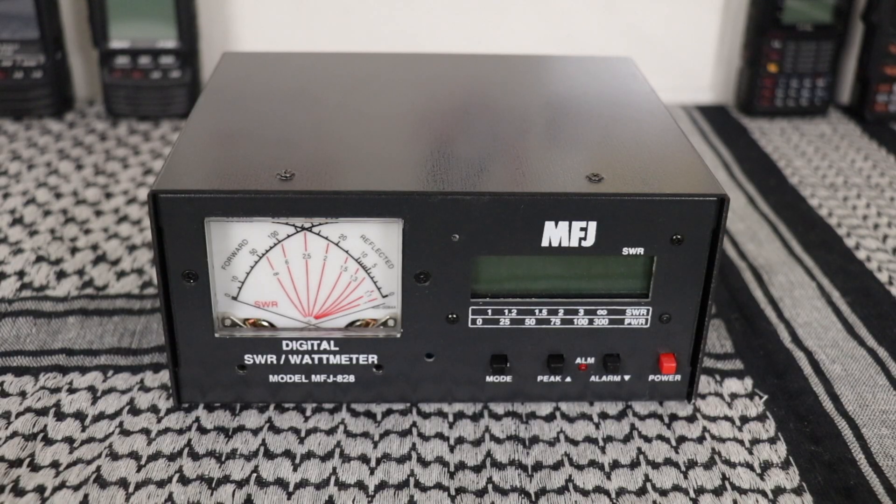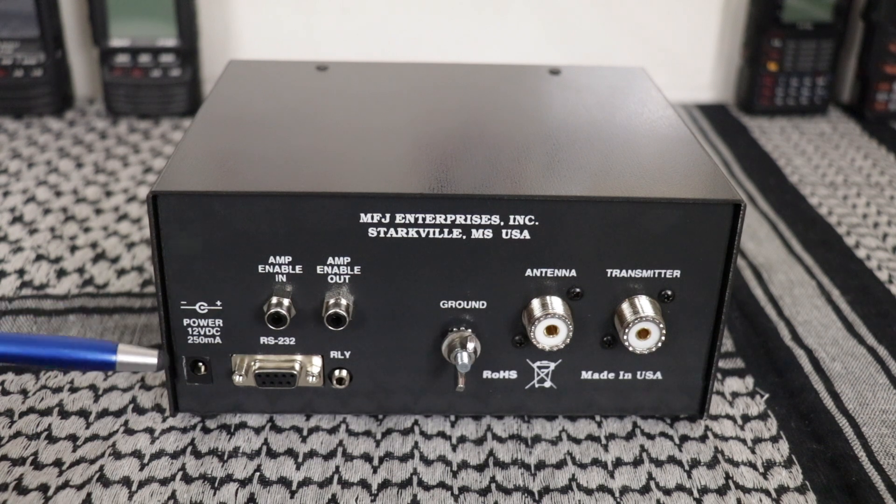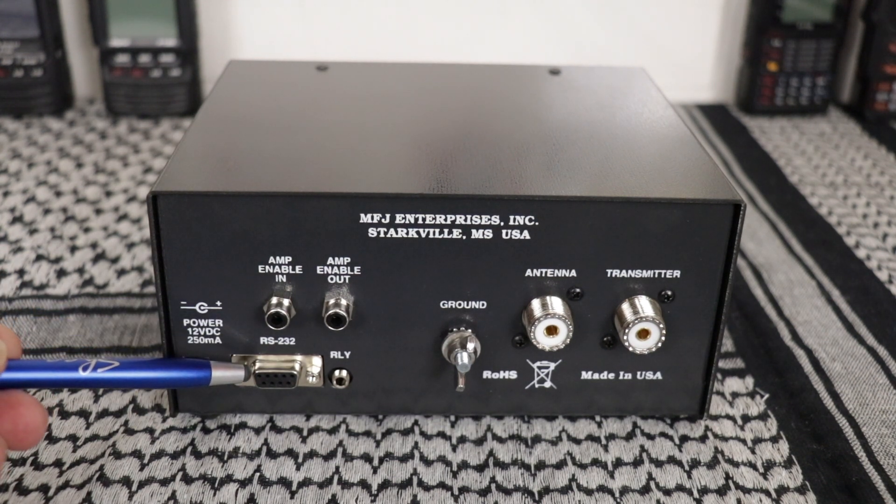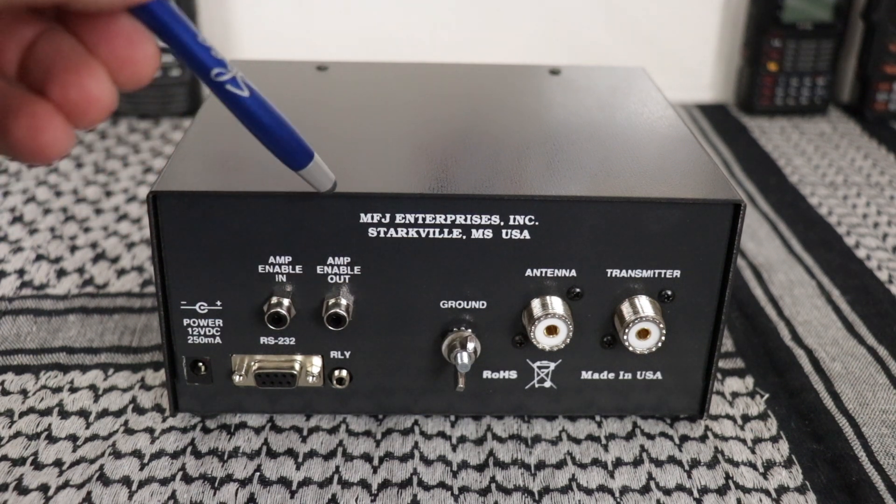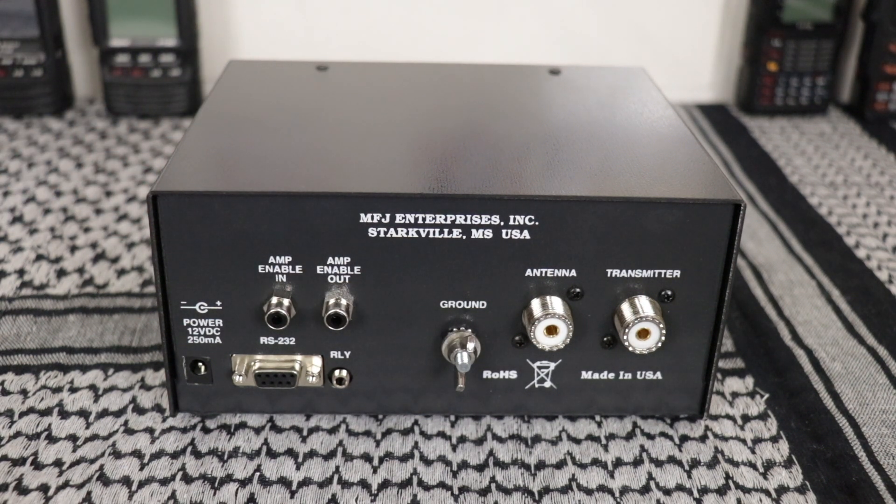This is the MFJ-828 digital SWR wattmeter. On the back you have the 12 volt power, the serial port for updating the firmware, and the two RCA jacks for controlling an amplifier's control output and relay control input.